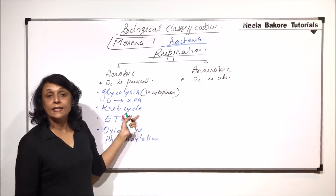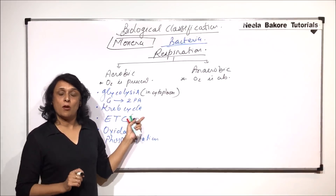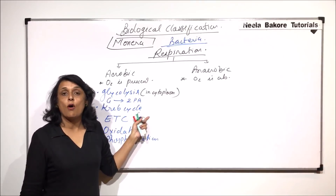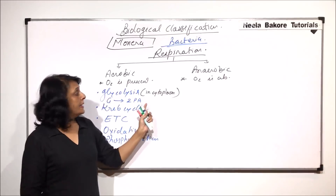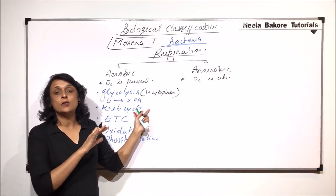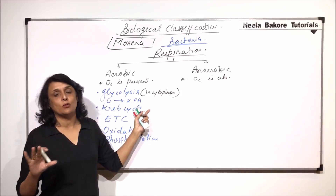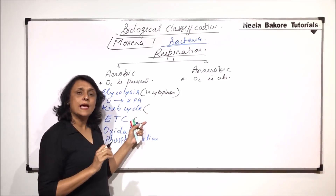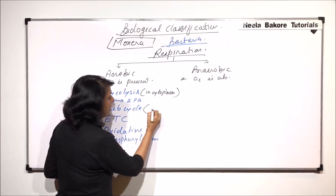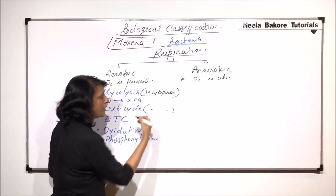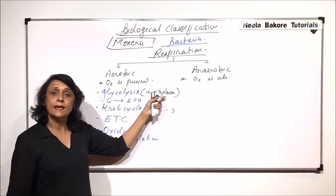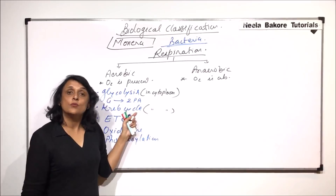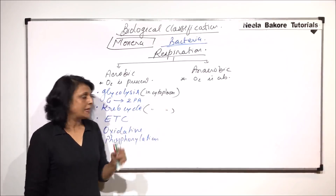The Krebs cycle, in case of a eukaryotic cell, takes place in the matrix of mitochondria. In prokaryotes, there is no mitochondria, so all the enzymes required for the Krebs cycle would also be present in the cytoplasm, and the reaction would take place in the cytoplasm.